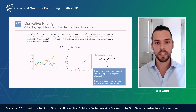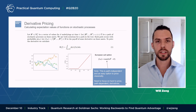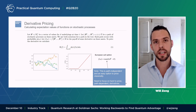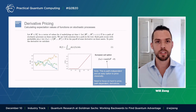The European call option is what we call a path-independent option, which makes it relatively easy to price — for some models of the stochastic process, it can be priced analytically, which is famously what the Black-Scholes equation does. It's path-independent because the payoff only depends on the price of the underlying asset at the final exercise time. This is in contrast to path-dependent options that are much more difficult to price. A simple example is one where the payoff is a function not of the final price but of the average of all prices seen between now and exercise. These path-dependent options are a large part of the derivatives market and are much more complex to price.